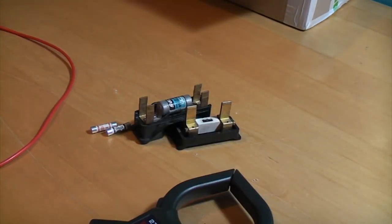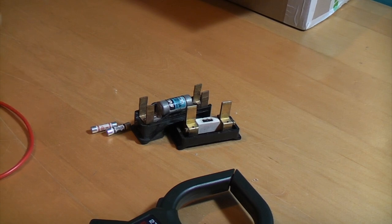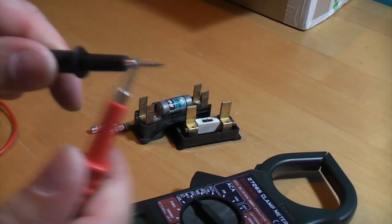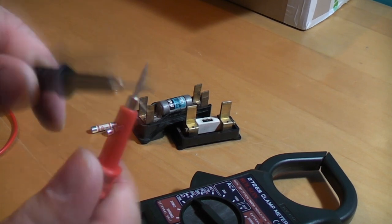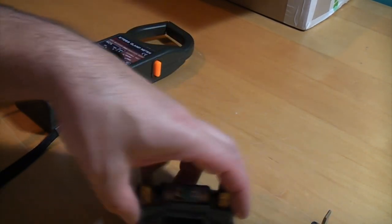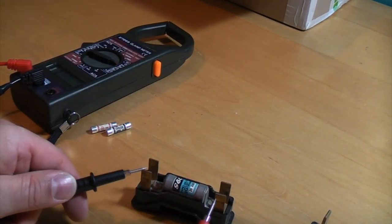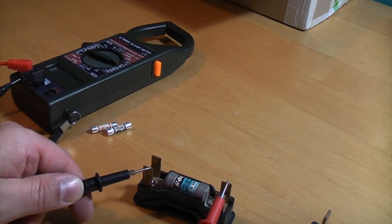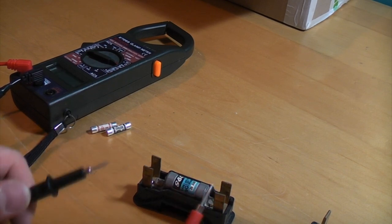So now if we touch the two probes together, the tester will emit a beep every time we touch them together. So testing a fuse with this is also very simple. Just touch it on one side and then on the other, and when you get a bleep like that, you know that the fuse is okay.